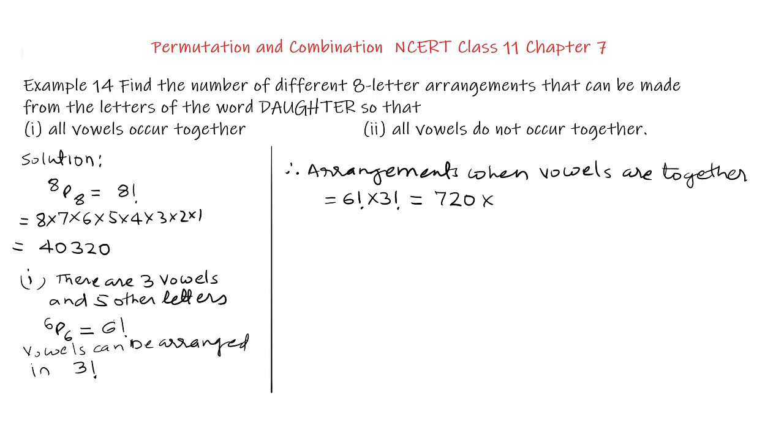And 3 factorial is 6. This gives us 720 multiplied by 6 is 4,320. So the answer to the first part when the vowels are together, the number of arrangements that can be made are 4,320. Now we go to part 2.